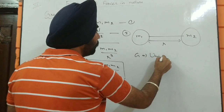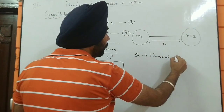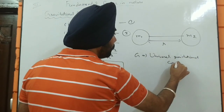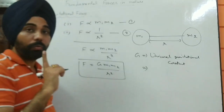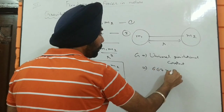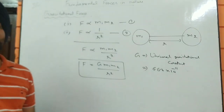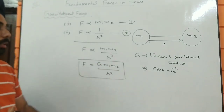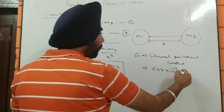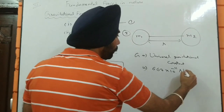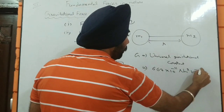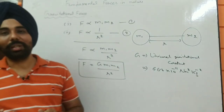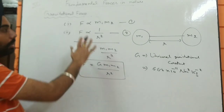The universal gravitational constant G has a fixed value all over the universe. Its value is 6.67 × 10⁻¹¹. You can also derive the units of G by rearranging the formula — setting G on one side and all other quantities on the other. Force has units of newtons, r² is in meters squared, and mass is in kilograms squared, so the units of G work out accordingly. This is Newton's Law of Gravitation, or the gravitational formula.